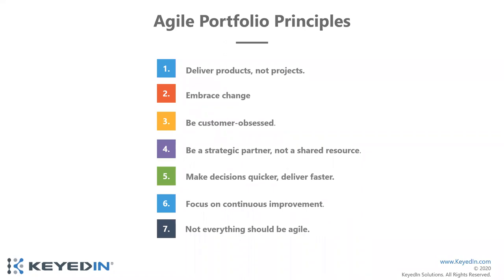Agile portfolio principles. We've got seven items listed here — these are some of the things that really tie into what makes this Agile versus just portfolio management or project management. At Keyed In, we talk a lot about this idea of what makes project or portfolio management more agile in nature — the concept of delivering products, not projects. A traditional project has start dates, end dates, things we do in logical order, something we deliver, and then we move on to the next project.